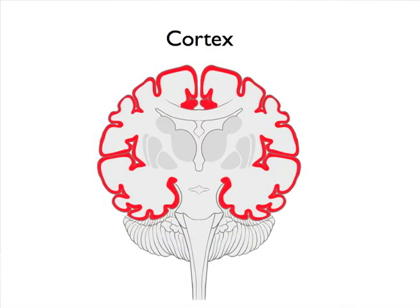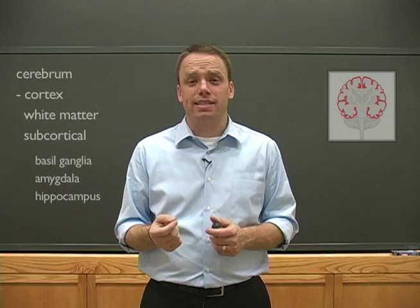Now I say thin, and I mean thin. It's on average about five millimeters thick. And in those five millimeters, there are up to six separate horizontal layers of neurons.